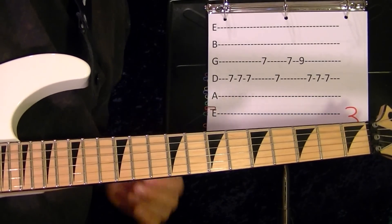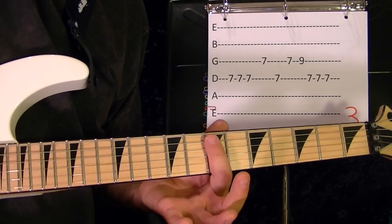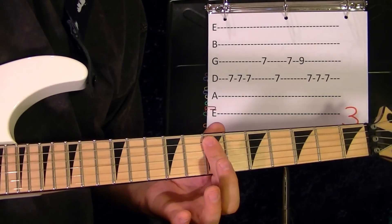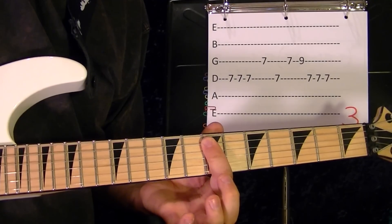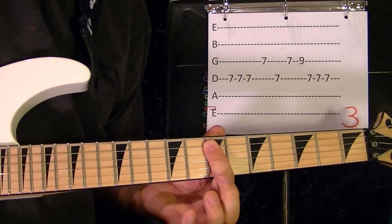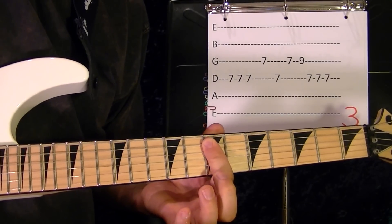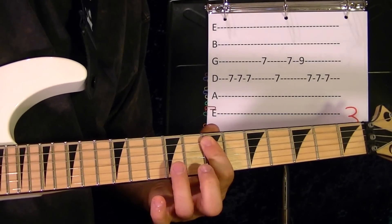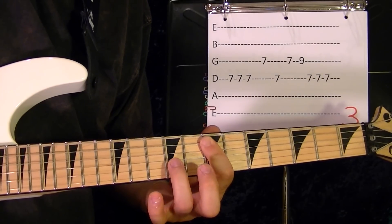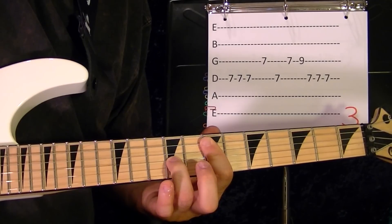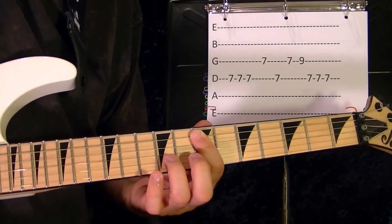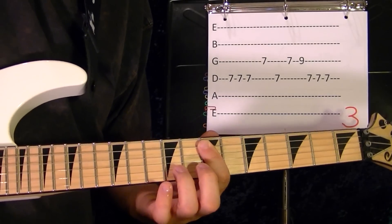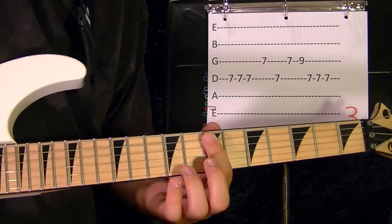Okay, so fourth string seventh fret three times, third string seventh, third string seventh, fourth string seventh, third string seventh, third string ninth, fourth string seven three times, fourth string second fret. So that part is like that.